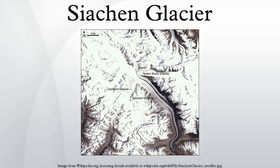The glacier lies between the Saltoro Ridge immediately to the west and the main Karakoram Range to the east. The Saltoro Ridge originates in the north from the Siachen Kangri Peak on the China border. The crest of the Saltoro Ridge's altitudes range from 5,450 to 7,720 m.